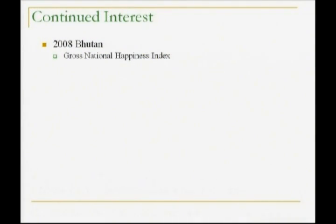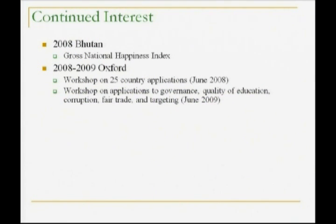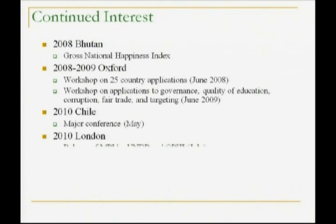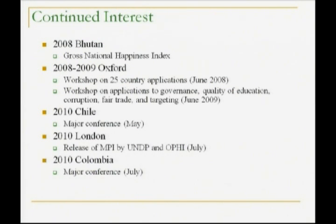There has been continued interest. The Gross National Happiness Index of Bhutan is built on the framework of the Alkire-Foster approach. In 2008–09 we had workshops on 25 countries' applications and on applications to different dimensions — governance, quality of education, corruption, fair trade, targeting. In 2010 in Chile there was a major conference with 300 people. Just last month in London there was the release of the MPI by UNDP and OPHI. And then another major conference in July. The interest in this approach is continuing.